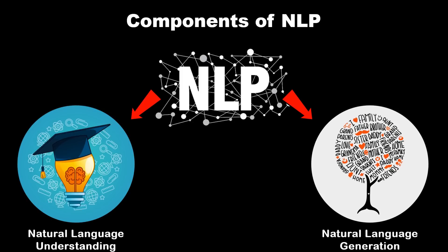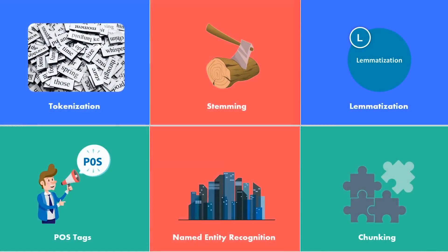Natural language understanding is usually harder than natural language generation because it takes a lot of time and effort to understand a particular language, especially if you are not a human being. There are various steps involved in natural language processing: tokenization, stemming, lemmatization, POS tags, named entity recognition, and chunking.